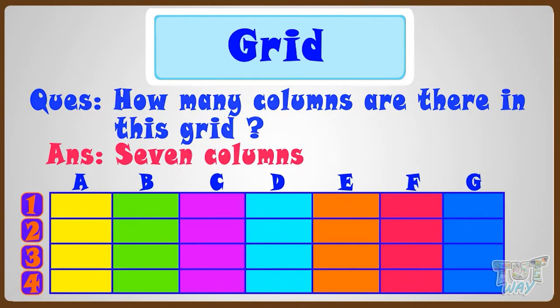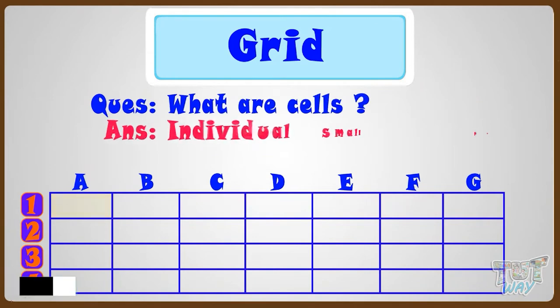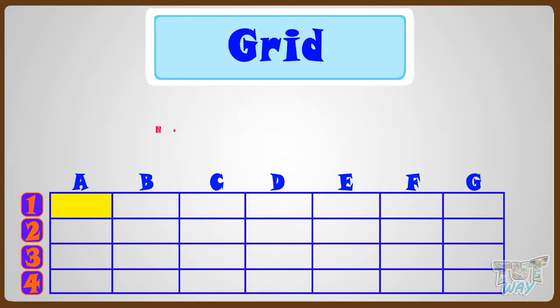Now let's see what are cells. These individual small partitions are called cells. Now let's see how we can name these individual cells.